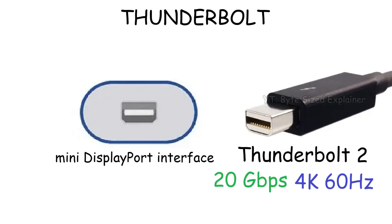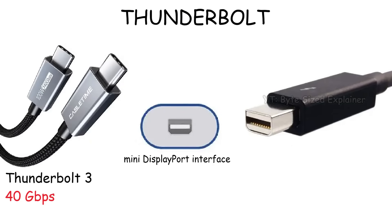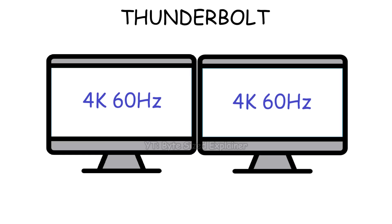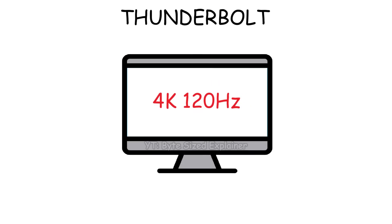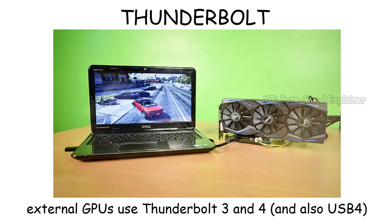Then Thunderbolt 2 doubled that speed to 20 gigabits per second. The real breakthrough came with Thunderbolt 3, which switched to the USB-C shape and pushed speeds up to 40 gigabits per second. This made it flexible and powerful enough to handle two 4K monitors at 60Hz, or a single 4K at 120Hz, or even 8K at 60Hz. Thunderbolt also allows you to connect to an external graphics card, which lets thin laptops achieve desktop-level gaming or rendering performance through a single cable.